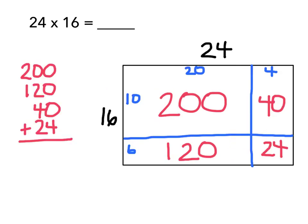Now I need to add all of the pieces together, because what I'm really trying to determine is how much 24 times 16 is. I'm looking at the entire inside of my array. So I'm going to add each of the pieces, 200 plus 120 plus 40 plus 24, and when I do that, I'm going to get 384. So 24 times 16 equals 384.